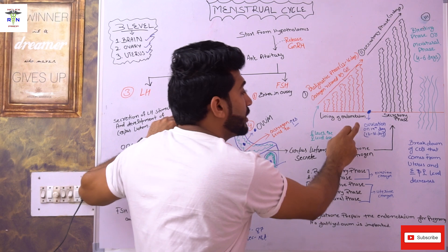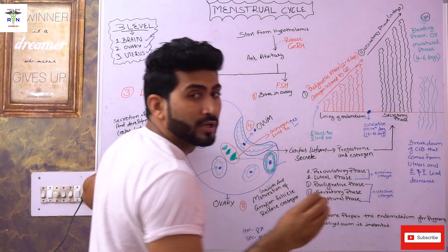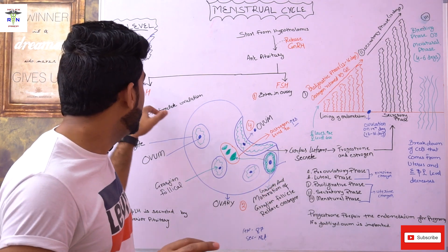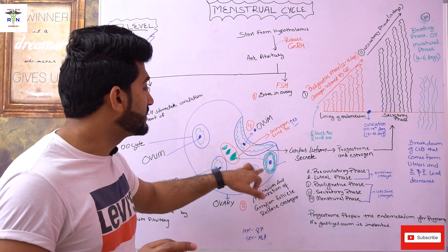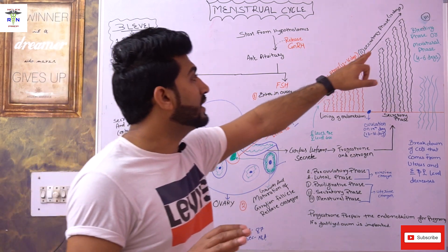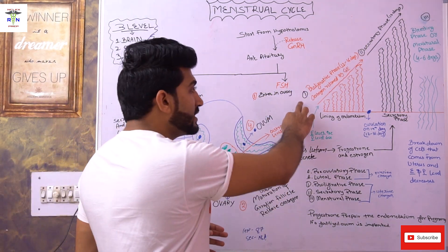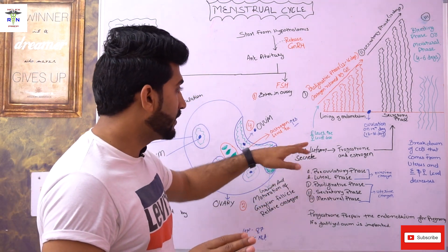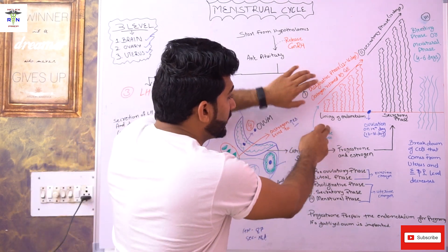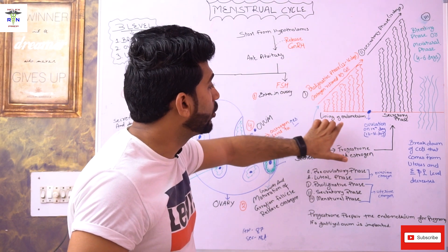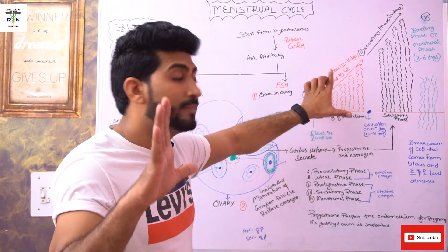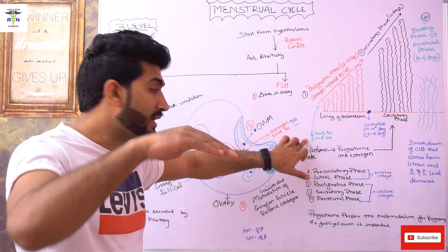On the 14th day, LH stimulates ovulation — you can see the ovum coming out here. The second thing LH does is cause development of the corpus luteum. As soon as LH enters the ovary, the Graafian follicle is converted into the corpus luteum. During the proliferative phase, estrogen also stimulates proliferation and growth of the endometrium, thickening the endometrial lining. Estrogen level increases and progesterone level decreases here.